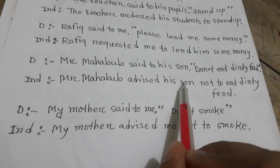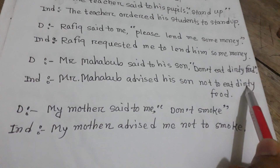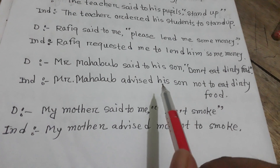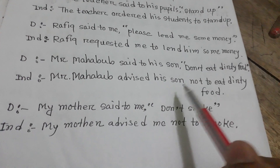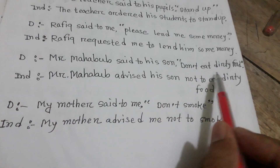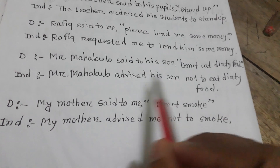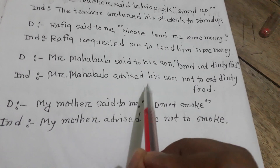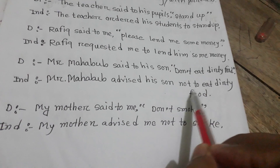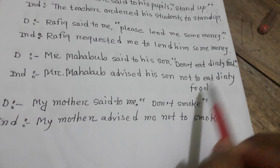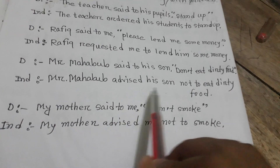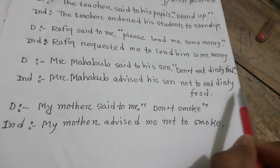Mr. Mahabub said to his son: 'Don't eat dirty food.' In indirect narration: Mr. Mahabub advised his son not to eat dirty food.